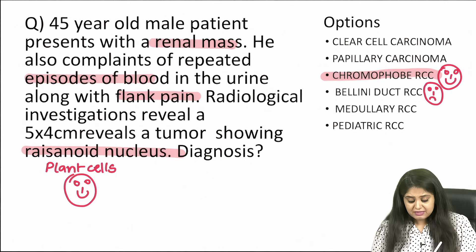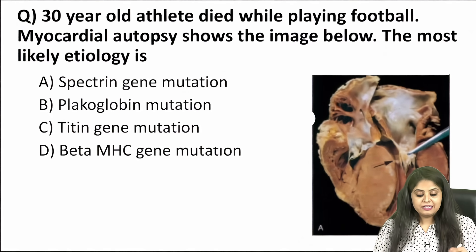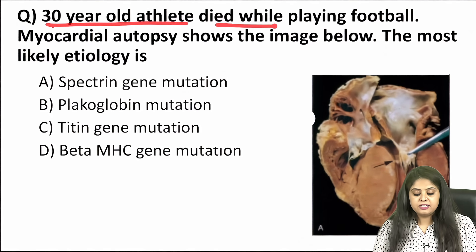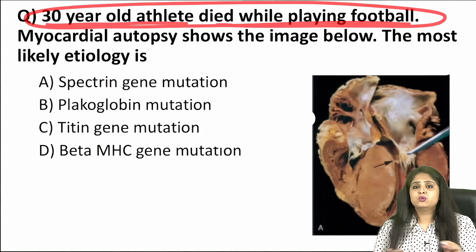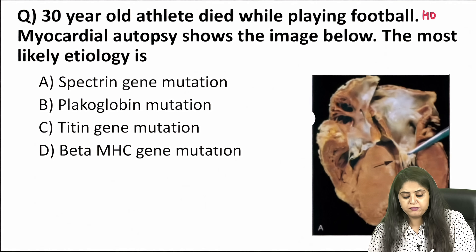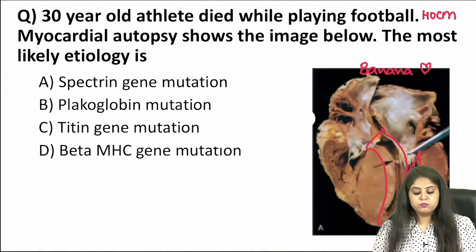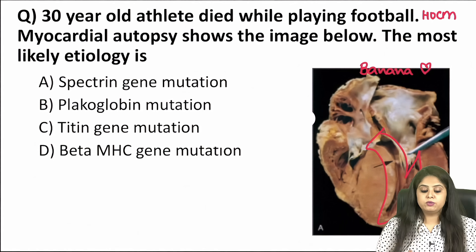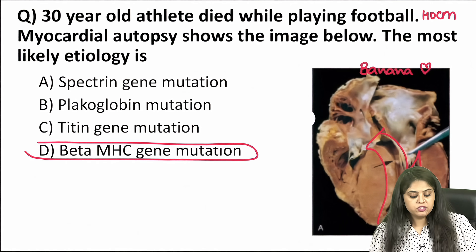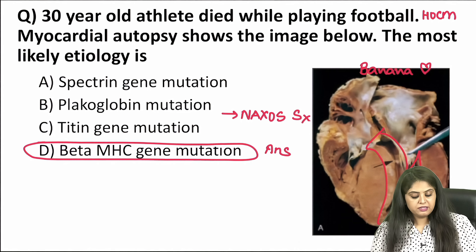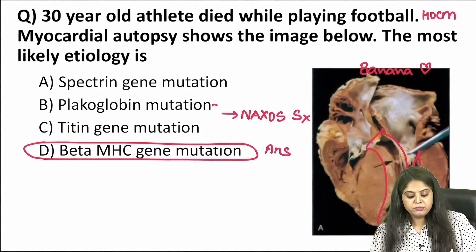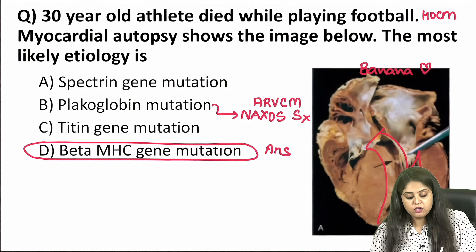Moving on to the next theme: a 30-year-old athlete died while playing football — that is hypertrophic obstructive cardiomyopathy (HOCM) with the classical banana-shaped heart. The question asks about the image and mutation correlation. The answer is beta-myosin heavy chain gene mutation. Among the other options, plakoglobin mutation is seen in Naxos syndrome, which is arrhythmogenic right ventricular cardiomyopathy — more important for NEET-PG.